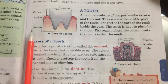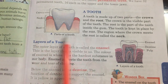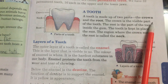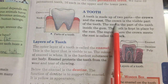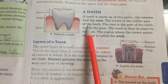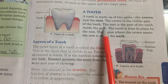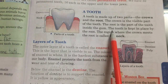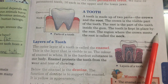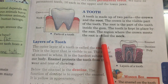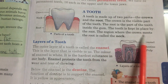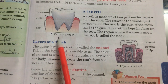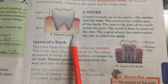A tooth is made up of two parts: the crown and the root. The crown is the visible part of the tooth. The root is the part of the tooth inside the gum. The tooth is kept in place by the root. The region where the crown meets the root is called the neck.